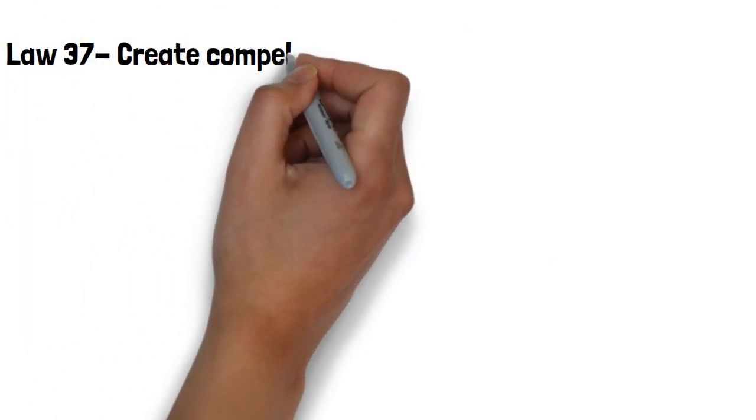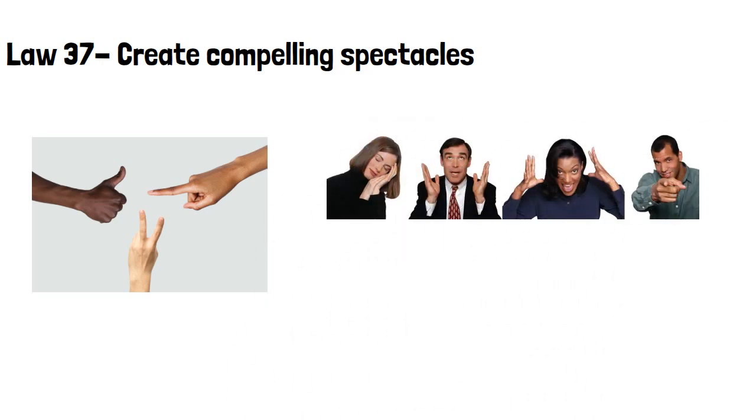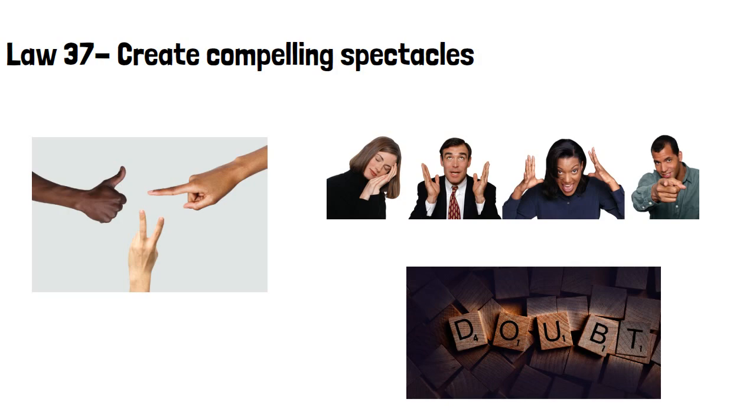Law 37, create compelling spectacles. By making big gestures, you will increase your presence and your power. People will be too surprised by appearances to uncover what you're really up to. As opposed to using words, visual gestures have an emotive power and immediacy that leave no room for doubt.